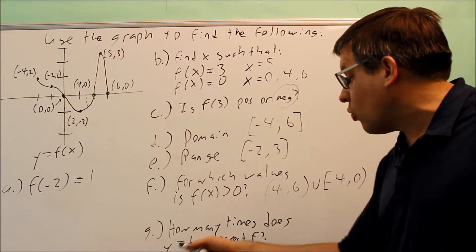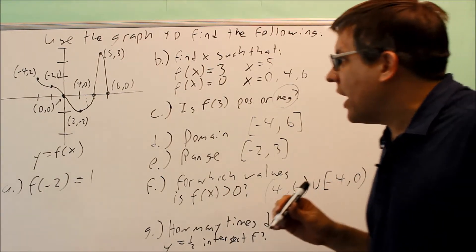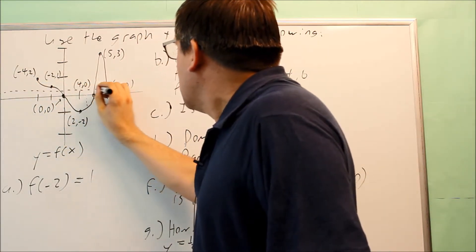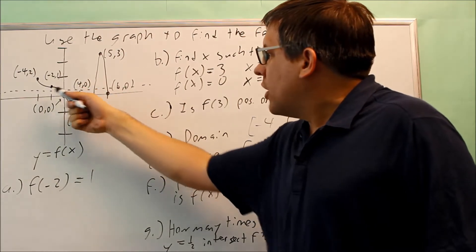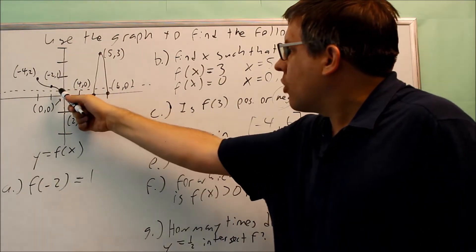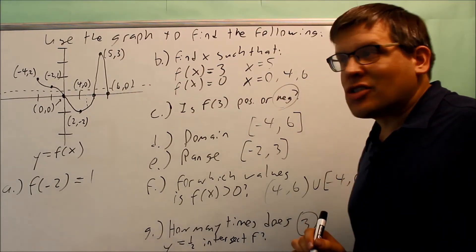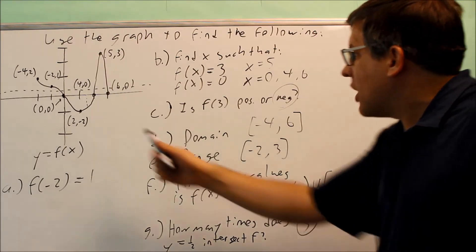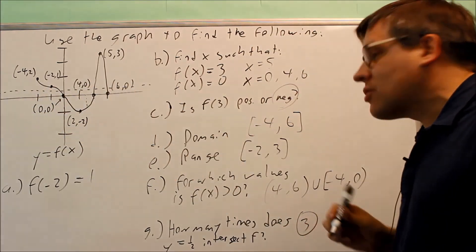The last one: how many times does a line y = -1/2 intersect f? y = 1/2 would be a horizontal line that would go through right about here. The middle part would be 1, so right there would be a dotted line going through. That's going to hit the graph 1, 2, 3 times. So the answer is 3. There's no special notation you need for that. We just want to know how many times would that line cross over f(x). In this case, it's 3.